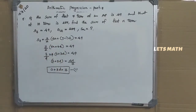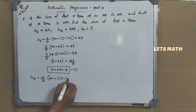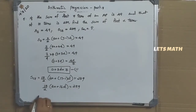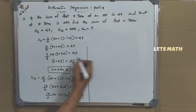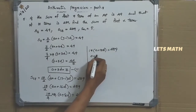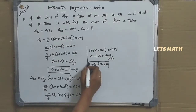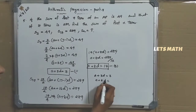Now S17 equals 17 by 2 into 2A plus 16D equal to 289. Taking 2 common: 17 into A plus 8D equal to 289. So A plus 8D equal to 289 by 17, giving A plus 8D equal to 17. This is equation number 2.